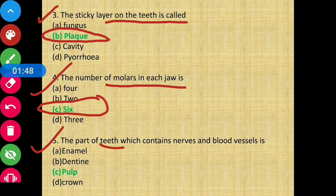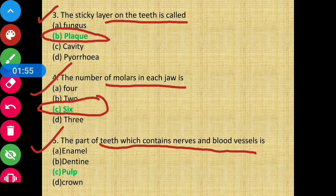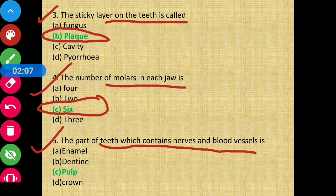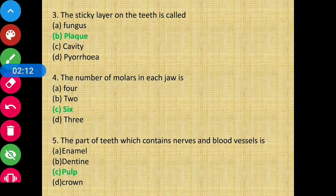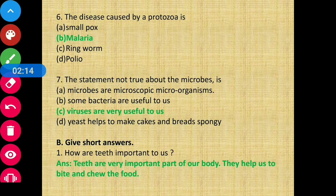Question number five: which part contains nerves and blood vessels? There are three main layers of teeth, and among those layers the one which contains nerves and blood vessels — the answer is option C, pulp.